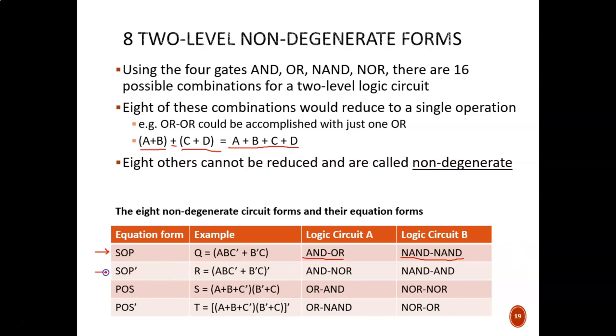You could also have an SOP invert form. This does the exact same thing as an SOP equation, it just complements everything at the end. Notice that the little prime symbol is the only difference between the Q and R equations. What two-level circuit can we use? Let's do an AND OR and then slap a bubble at the end, making it an AND NOR. Or similarly, take a NAND NAND and remove that bubble at the end, leaving you with a NAND AND.